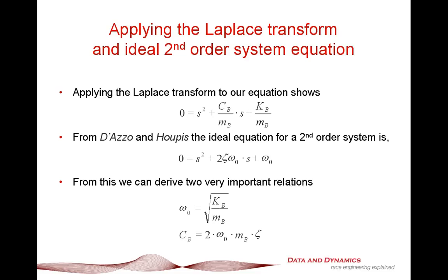any second-order system can be described by the damping ratio KSI times your natural frequency omega naught, in this form as you see in the second line. Crunching the numbers and comparing it, the natural frequency is simply the square root of the body wheel rate on the mass of the body. And CB, any given damping rate can be expressed as two times the natural frequency times the mass of the body times the damping rate.